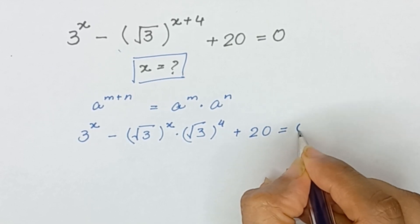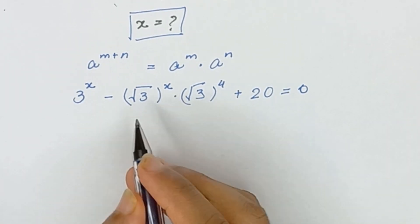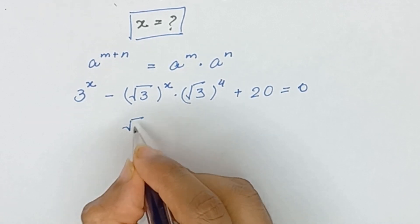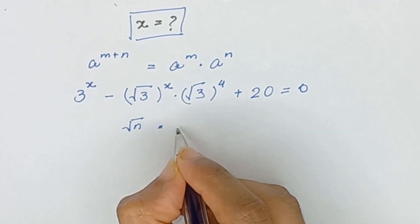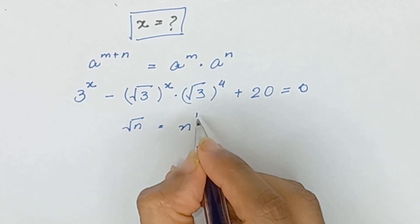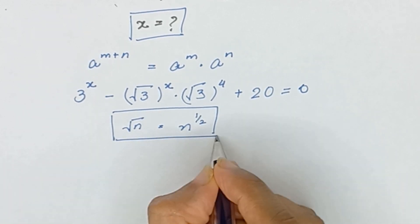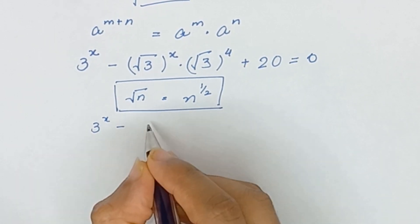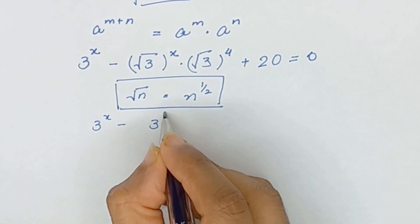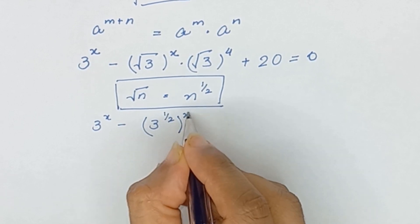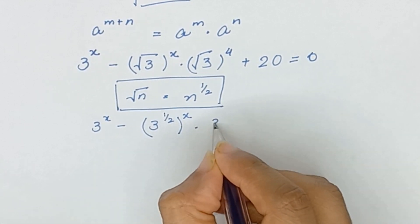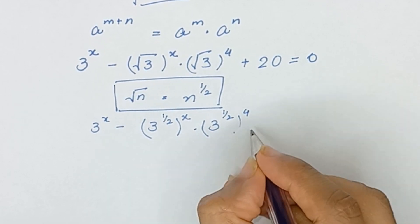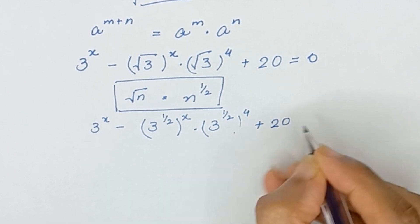We also know that the square root of any number is equal to n to the power 1 divided by 2. So it will become 3 to the power x minus 3 to the power 1/2 to the power x, times 3 to the power 1/2 whole power 4, plus 20 is equal to 0.